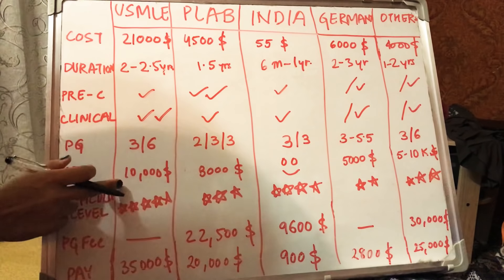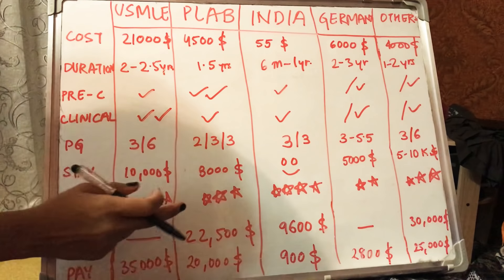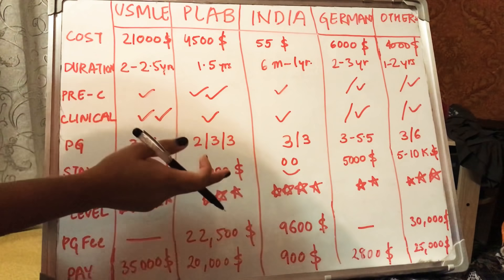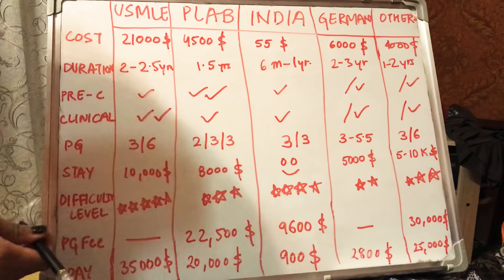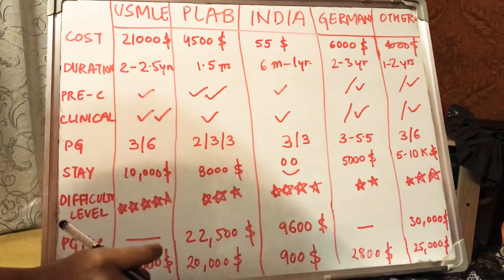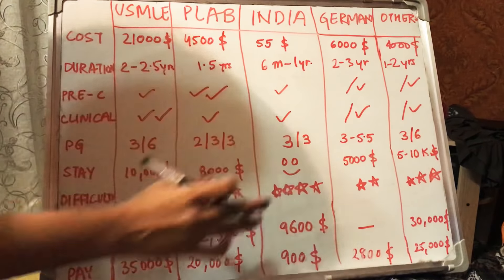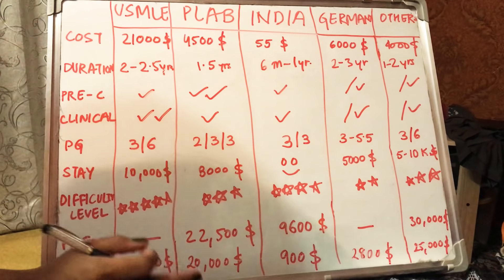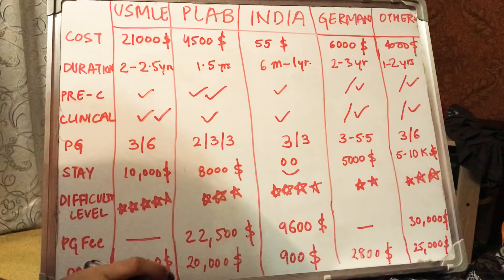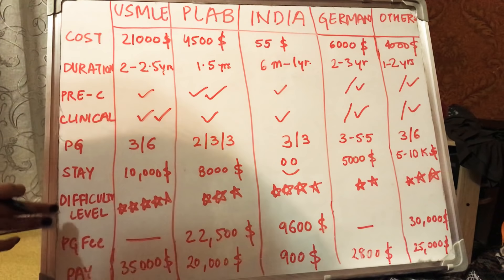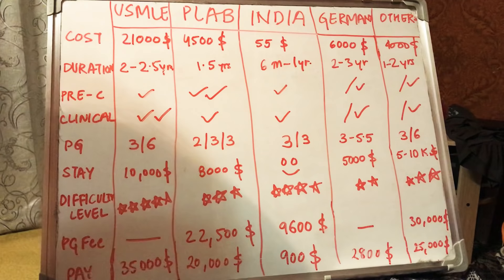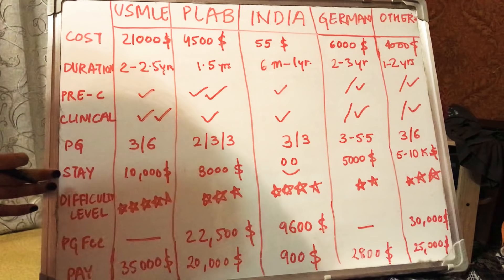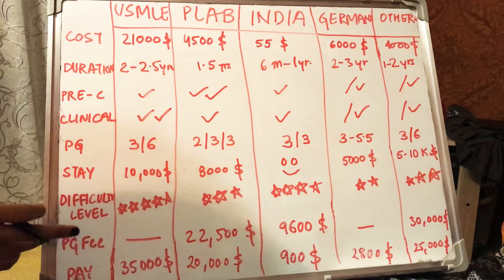For monthly stay costs: staying in the USA costs about $10,000 a month. PLAB — staying in the UK — is about $8,000. In India, if it's your home country, expenses are minimal. Germany is about $5,000 a month. Canada and Australia range from $5,000 to $10,000 depending on location and personal preferences. These figures reflect the first month when you arrive at a new place and try to settle down, which usually costs the maximum amount of money.